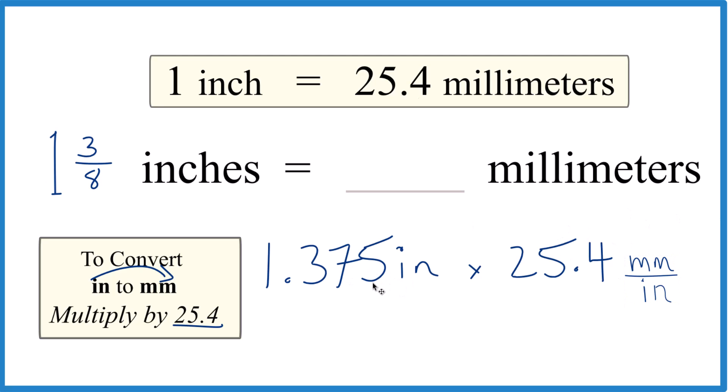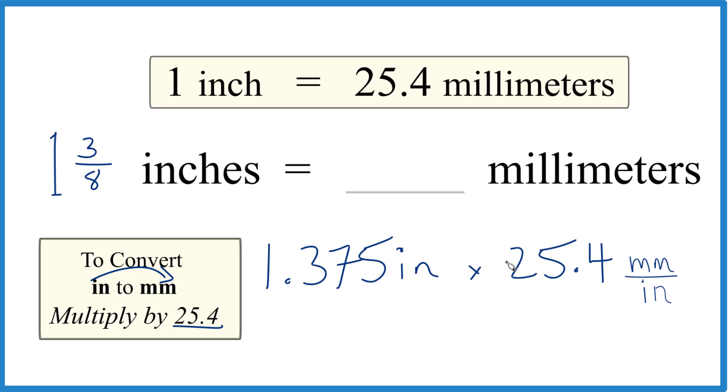Now, when we multiply 1.375 times 25.4, we end up with 34.925. Let's call it 34.9. And we have inches on top here and on the bottom. They cancel out when we multiply, leaving us with millimeters. Those are the units we're looking for.